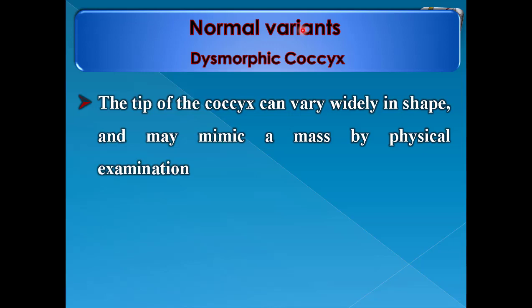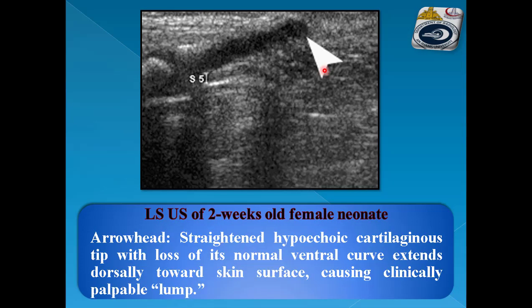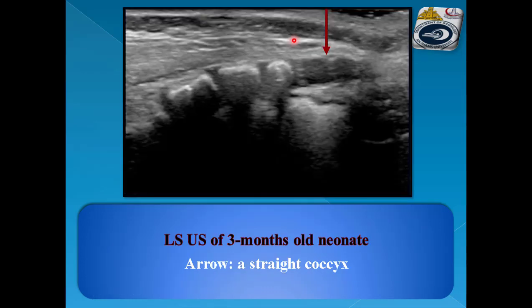Another normal variant is dysmorphic coccyx. The tip of the coccyx can vary widely in shape and may mimic a mass by physical examination. On LS ultrasound, the coccyx shows a hypoechoic cartilaginous tip acutely undulated dorsally as it ascends toward the skin surface, causing a palpable mass. Another example shows the direction of the coccyx tip toward the skin surface causing a palpable mass on physical examination. This image shows a straight coccyx with loss of normal kyphotic curvature.